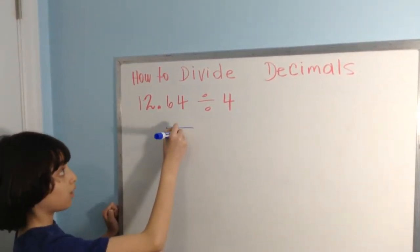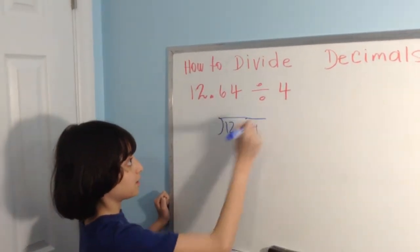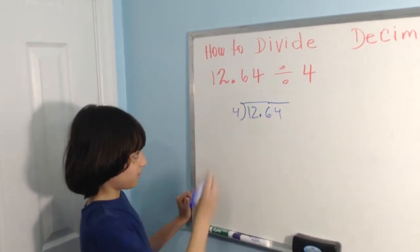Okay, 12.64. Make the numbers in the correct position. Divide by 4.